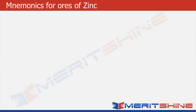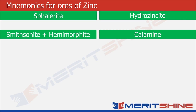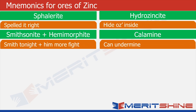Let us try to remember these. We'll put the names of ores in the green boxes and in the orange boxes we'll write words to help us associate. Sphalerite sounds like spell it right. Hydrozincite sounds like hide or seize inside. Smithsonite sounds like Smith tonight, hemimorphite sounds like hemimorphite, and calamine sounds like can undermine.